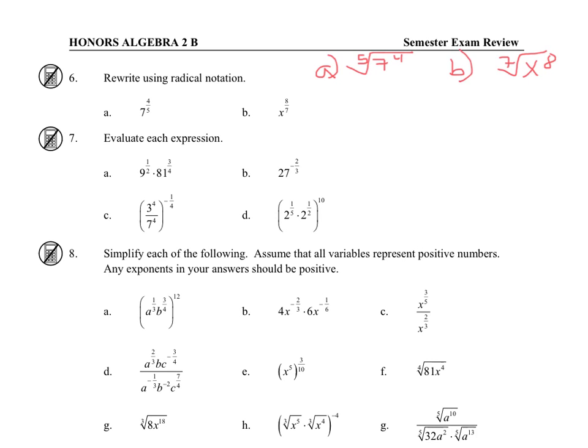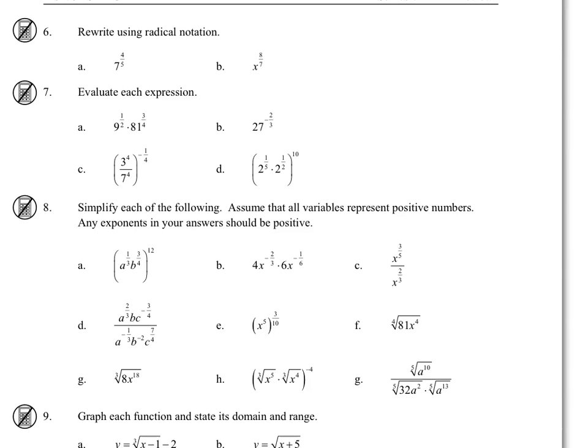Okay, so now to evaluate, that means simplify and find the value. So, for 7a, 9 to the 1/2 is a square root, so that's 3.